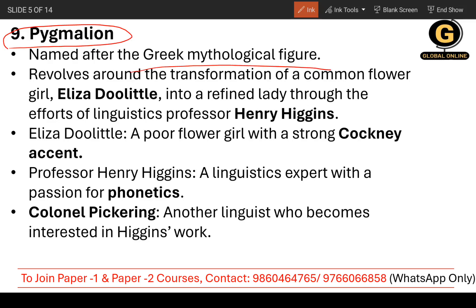Myth says Pygmalion was the mythological figure who falls in love with his own creation — his statue. Just imagine you created something and you fall in love with that thing. Now when we talk about G.B. Shaw's Pygmalion, you need to understand three characters. First is Eliza Doolittle. Second, Henry Higgins. Third, Colonel Pickering.